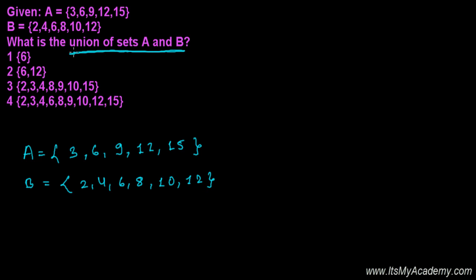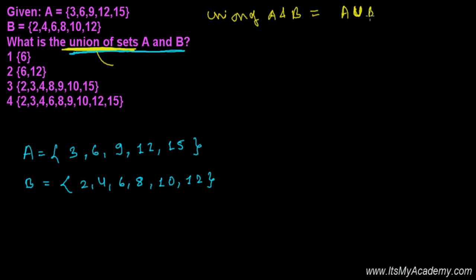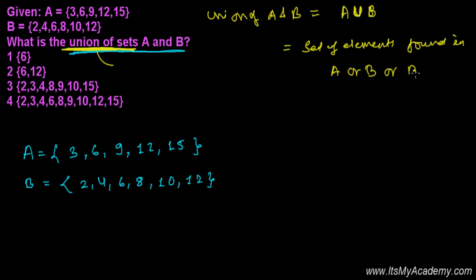Before writing the union of set A and B, we must understand what union of sets means. Union of sets means those elements — those members of set A and B — which are found in A, or in B, or in both. We represent the union of A and B using the symbol A ∪ B, and this represents the set of elements found in A or in B or in both.